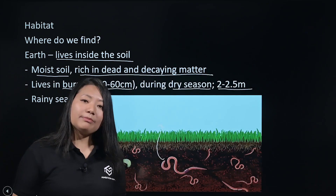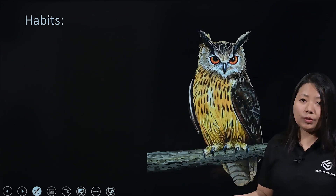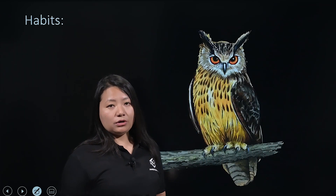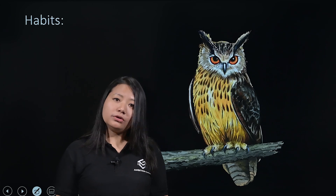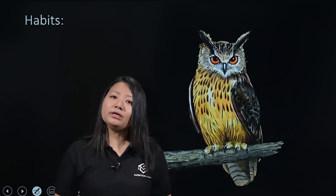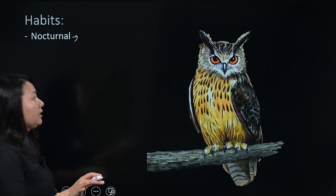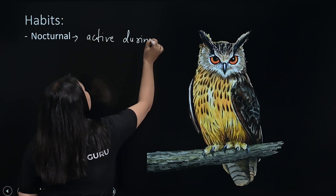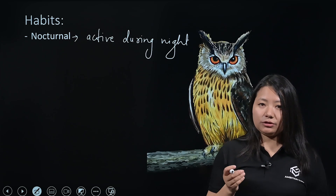Now let's talk about the habits of the Earthworm. One of the habits of the Earthworm is similar to that of the owl — sleeping during the day and being active at night. So the Earthworm is nocturnal in habit. Nocturnal means they are active during the night and passive during the daytime.